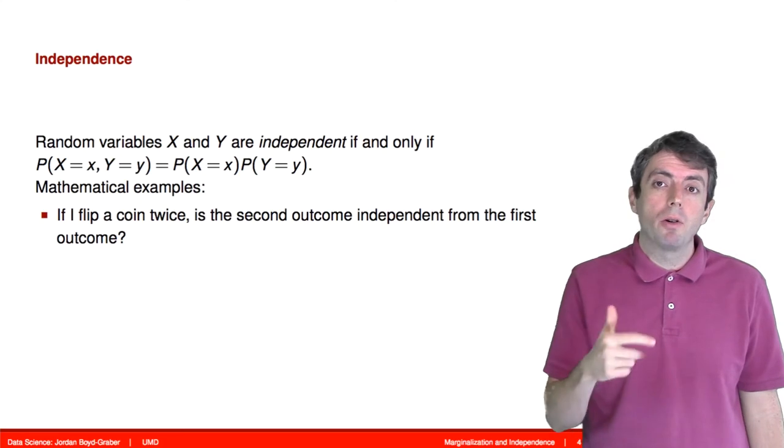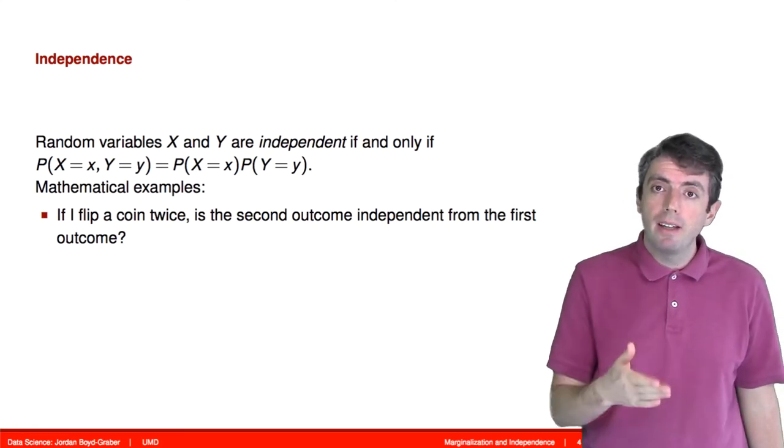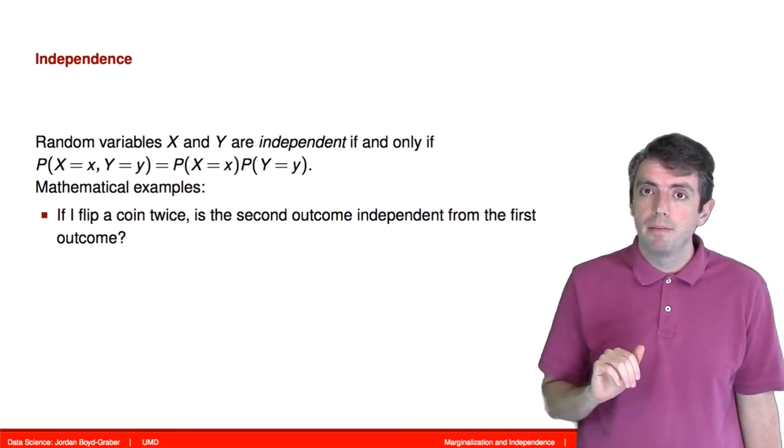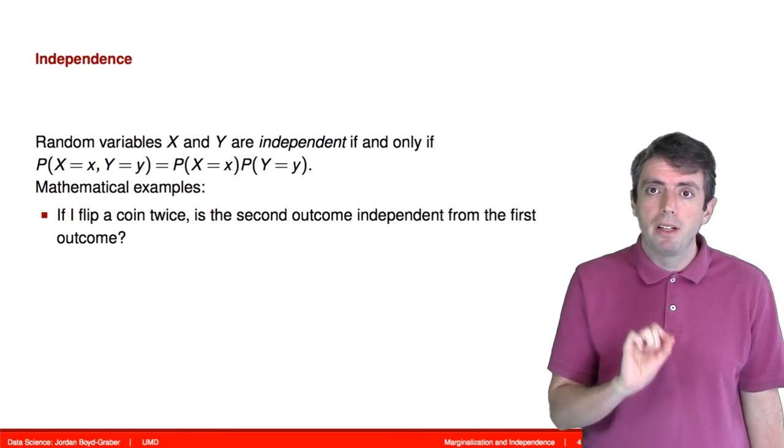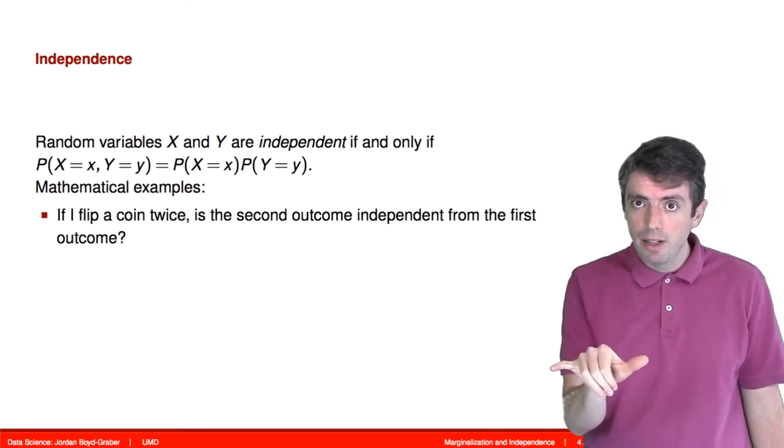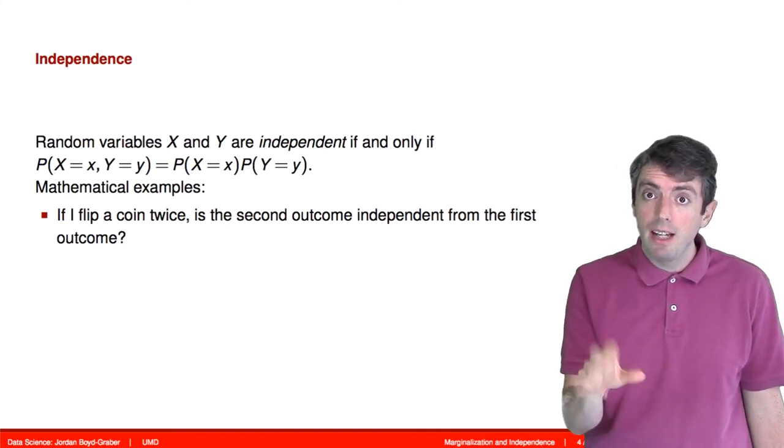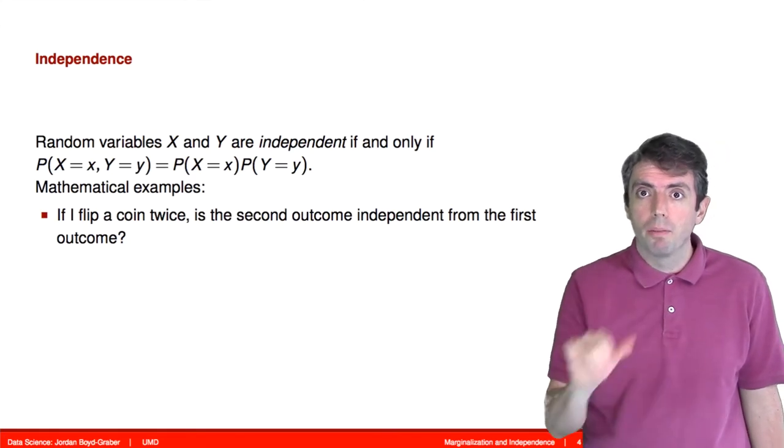So often when we talk about flipping a coin twice, we talk about those as two separate random variables and we say that those two random variables are independent. The probability of getting two heads in a row is equal to the probability of getting a head on each of the two individual trials multiplied together. So it's 0.5 in each case and so the probability of getting two heads is one fourth or 0.25.